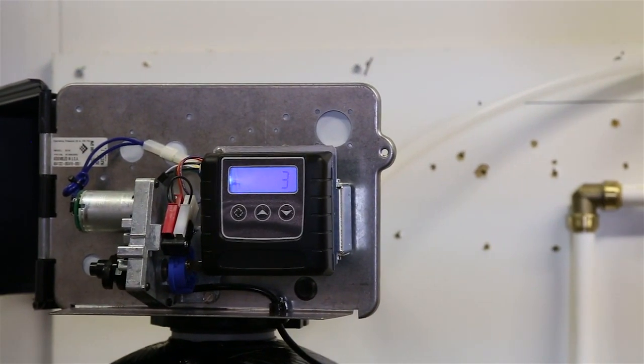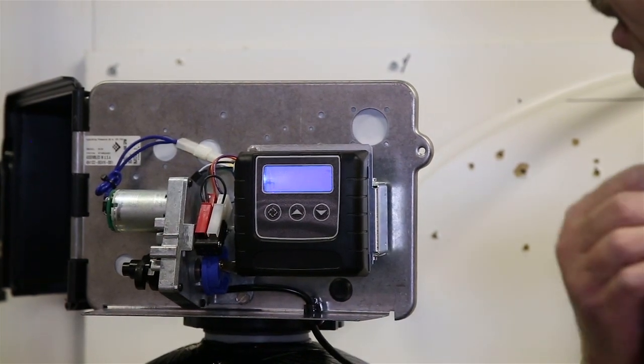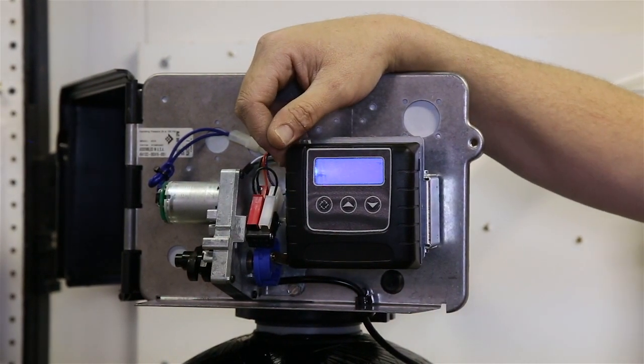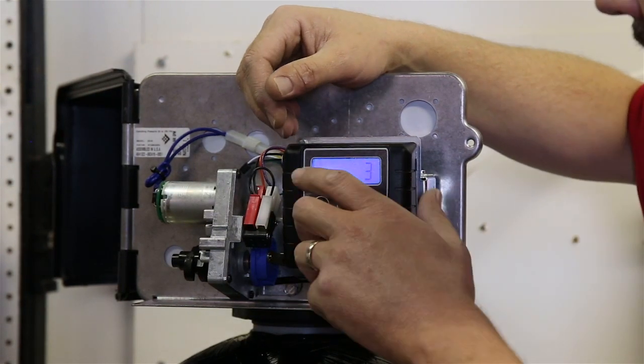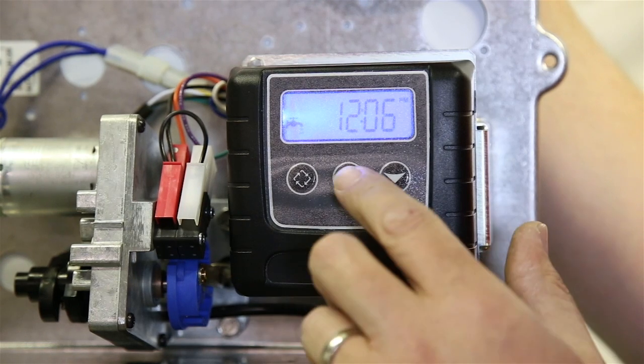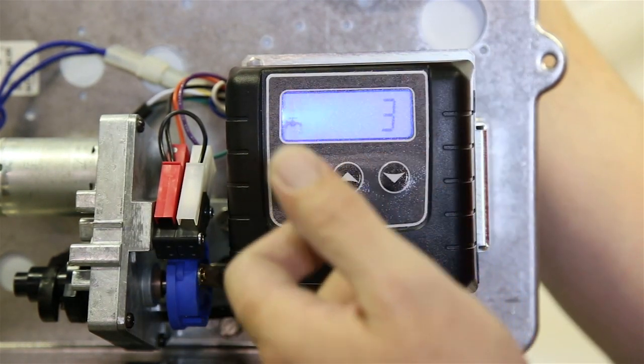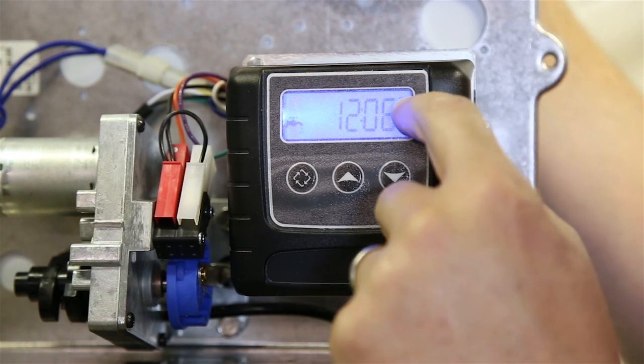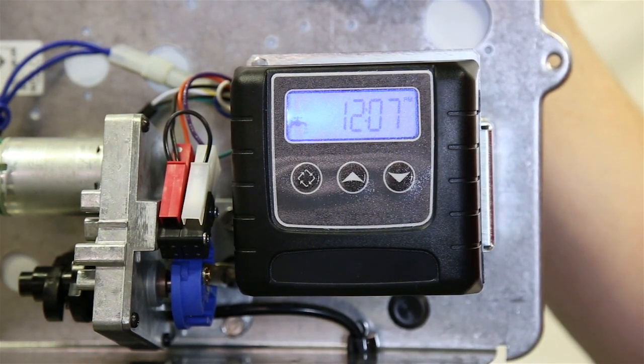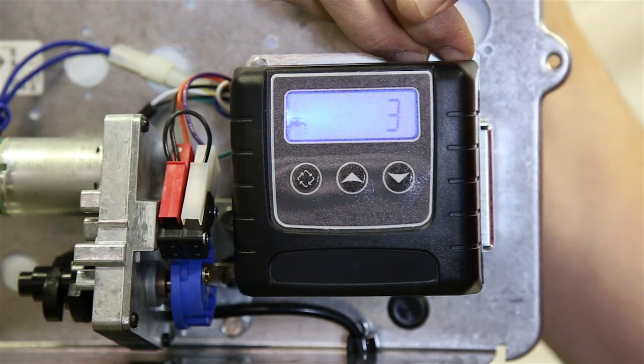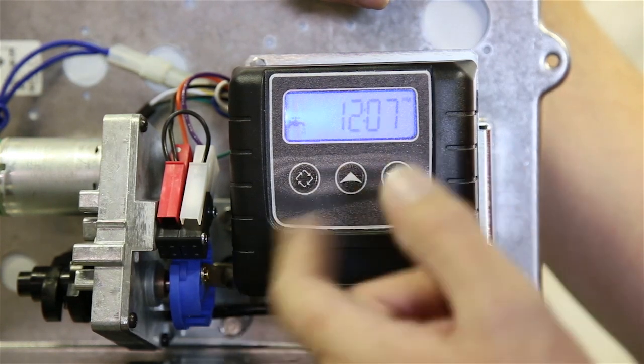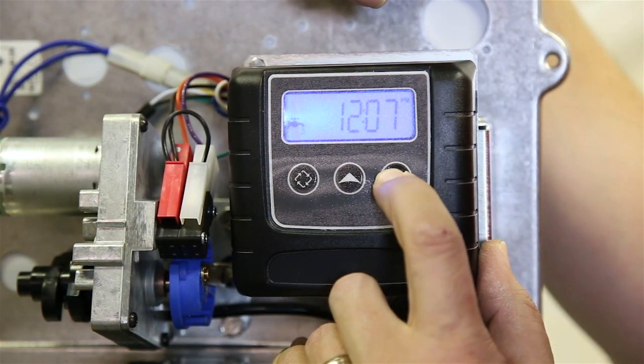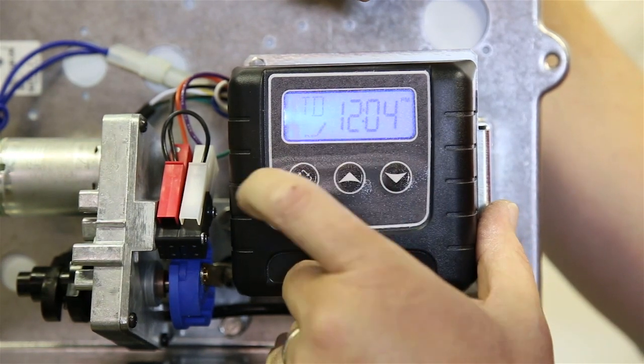So what we want to do is we want to check the programming first on this. And it's pretty simple to do. In order to get to the master programming mode on this particular controller, which is called a Fusion or an SXT control, you're going to have to change the clock to 12:01 PM. So to change the clock, we can push and hold either the up or the down arrow until we see the time start to change. You'll actually see a TD show up in the corner here and then a pencil with some dots.